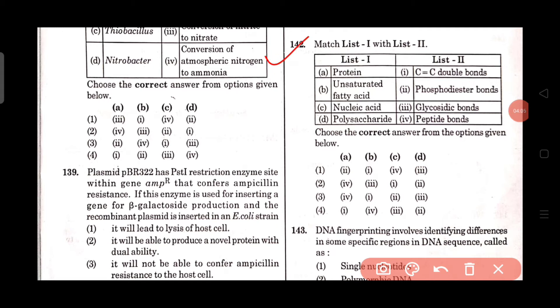Question number 142: Match list 1 with list 2. For protein, peptide bonds are the right answer. For unsaturated fatty acid, carbon double bond carbon are present. For nucleic acid, phosphodiester bonds are present in between the nucleic acid. For polysaccharide, they are bounded by glycosidic bonds. Option number 3 is correct.